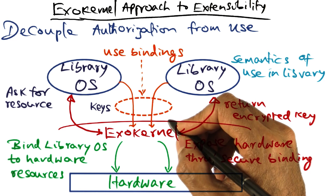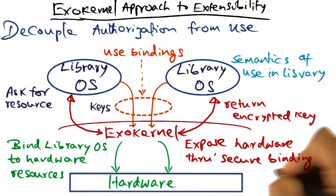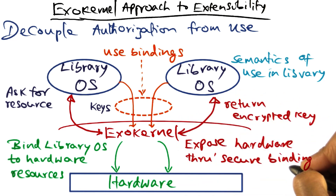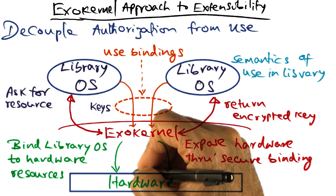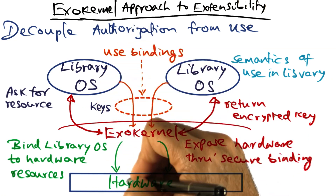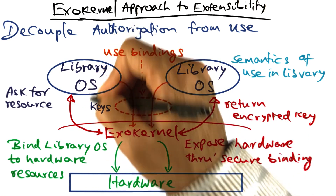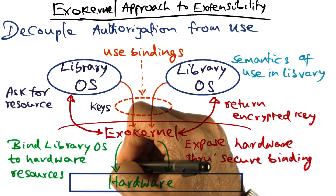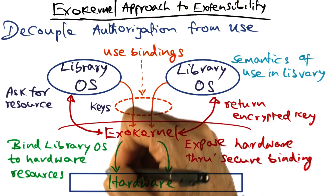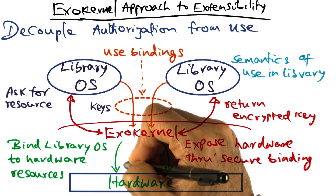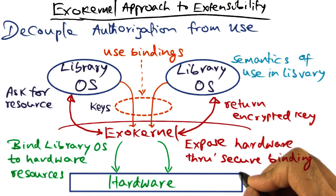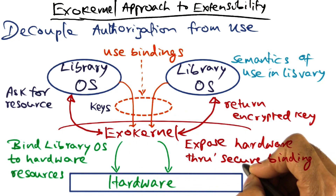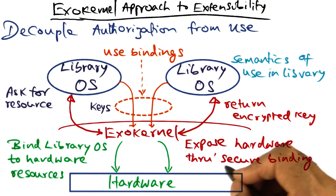Establishing the secure binding is a heavy-duty operation. That's where ExoKernel comes in the middle, deciding whether this particular library operating system can have access to a specific resource. It makes the decision, and once such a secure binding has been established, the actual use of the hardware is going to be much cheaper.